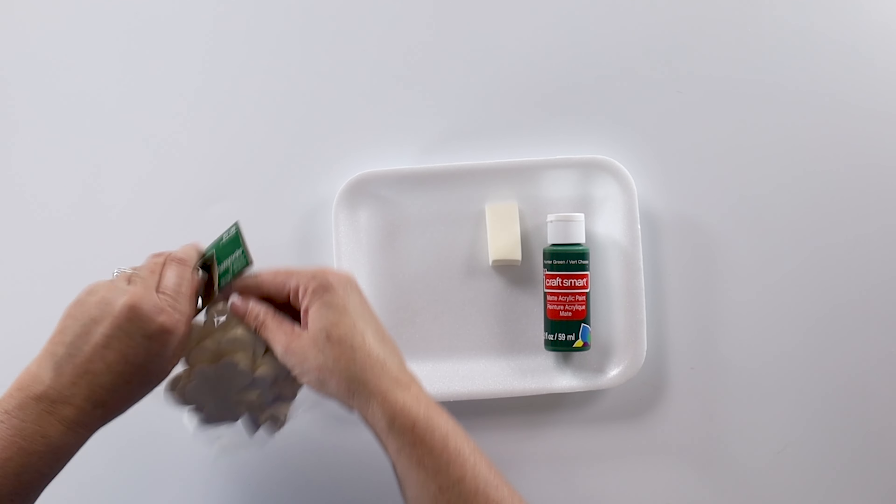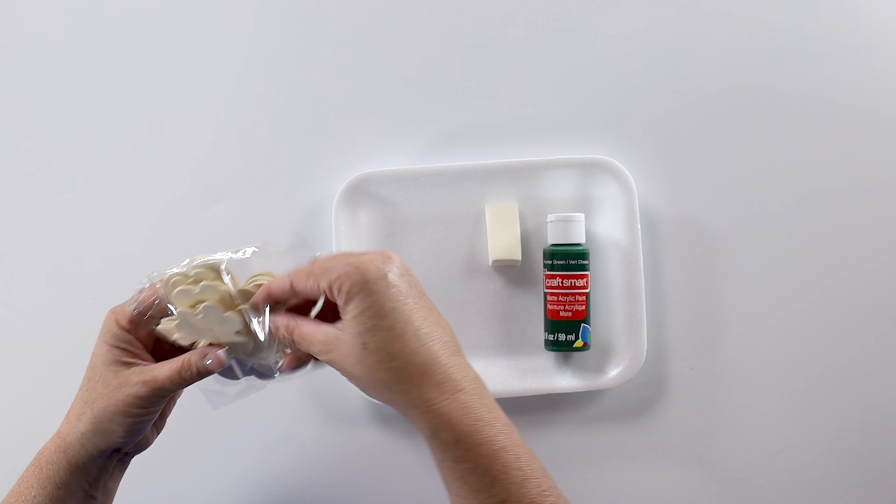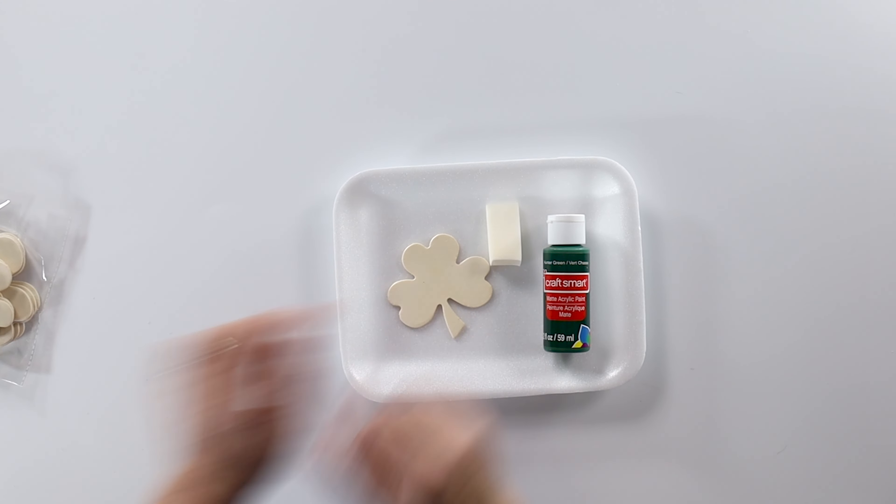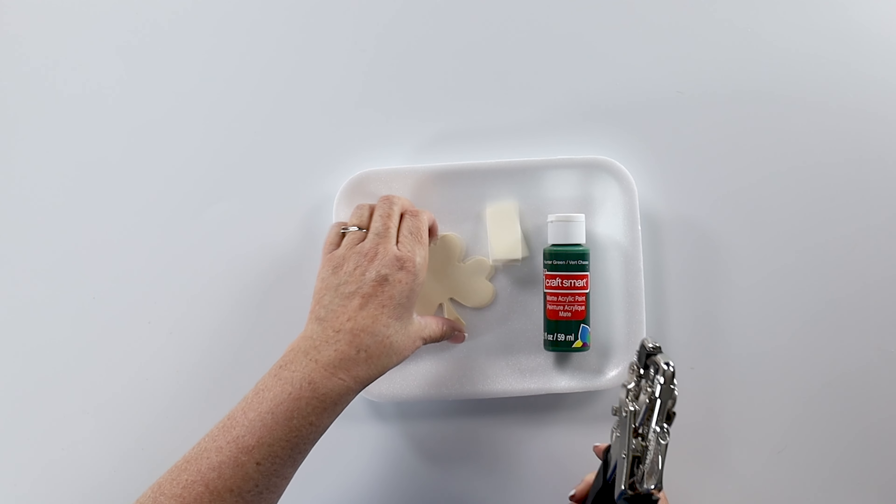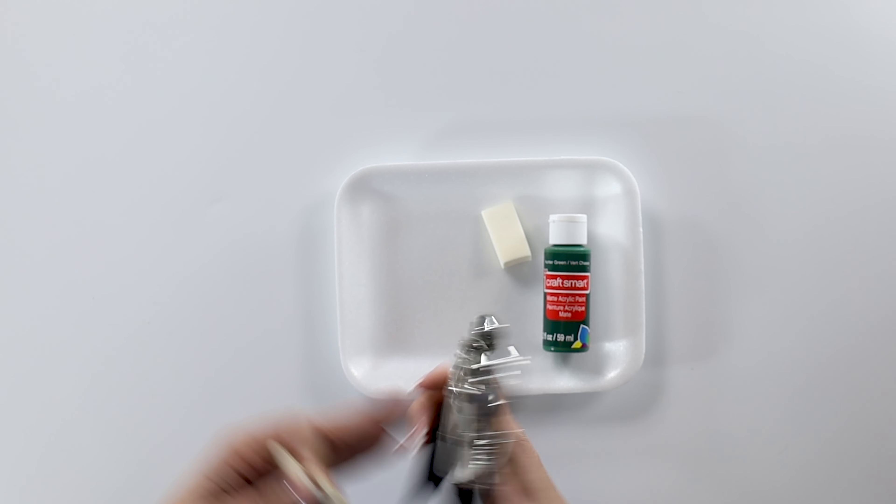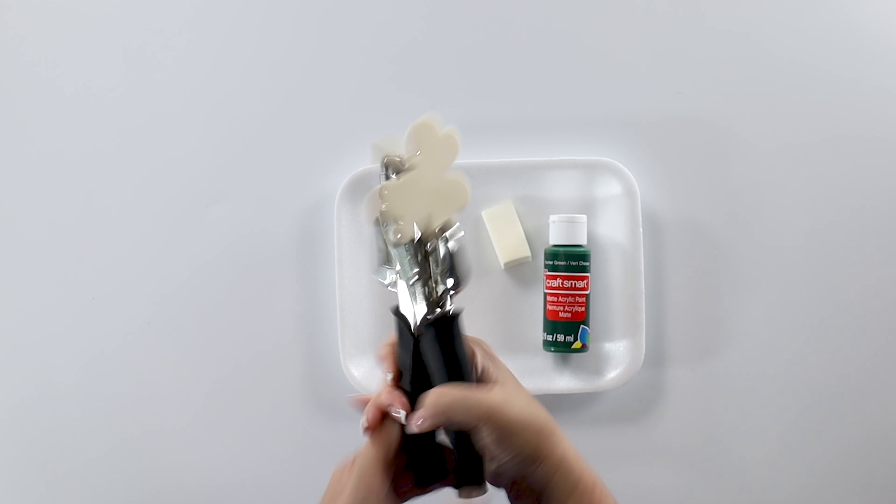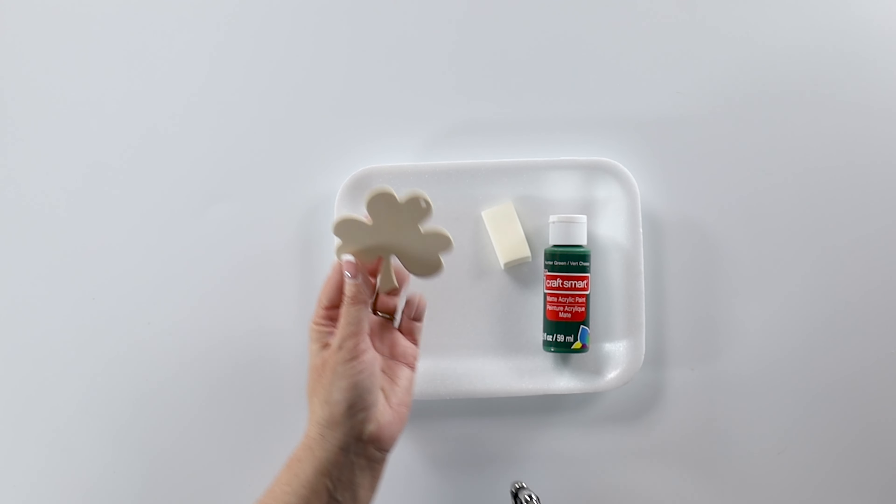I'm going to open my little package of shamrocks, and I want to use the mid-sized one, that middle-sized one. And I want to poke a hole in there, so I'm going to use my crop-a-dial, and I'm going to use the 1/8 hole size, and then just grip the handle together. And there's my hole.